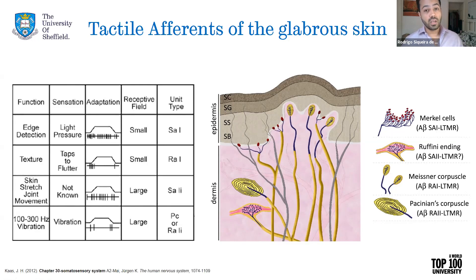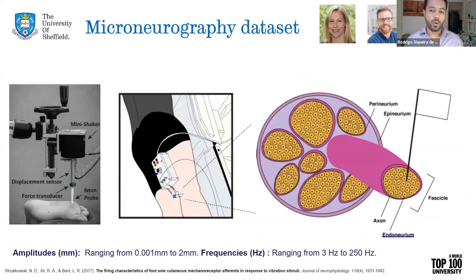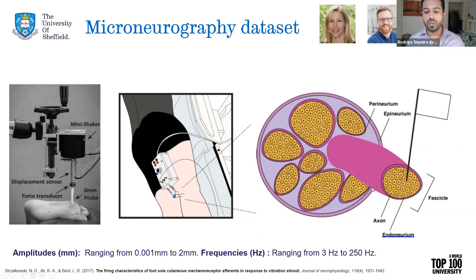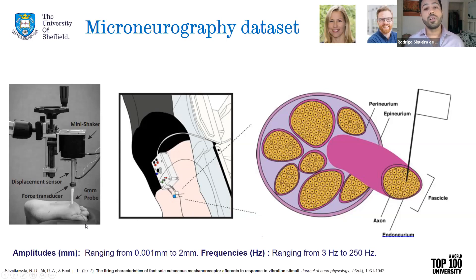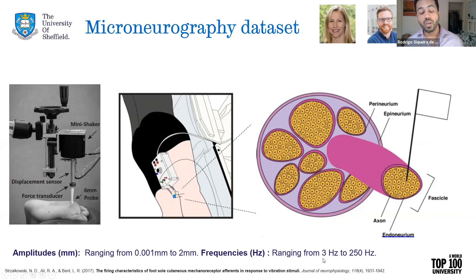But how do you study those afferents? One way is to use microneurography, like our collaborators Lea Bent and Nick did at Guelph University. They got participants to sit and have electrodes implanted on their nerve, and then recorded one afferent at a time — it's a very hard technique that takes time and requires the subject to be immobilized. They applied a range of amplitudes and frequencies of stimulation to the sole of the foot — amplitudes from 0.01 millimeters to 2 millimeters and frequencies ranging from 3 Hz to 250 Hz — and then recorded this dataset.